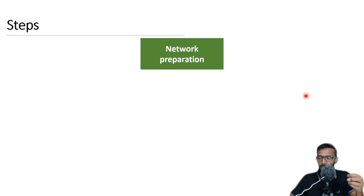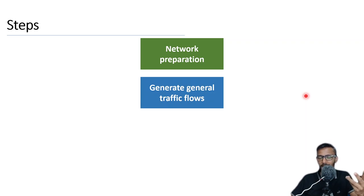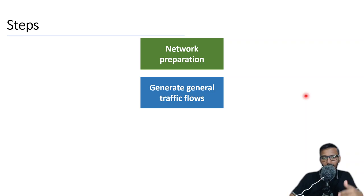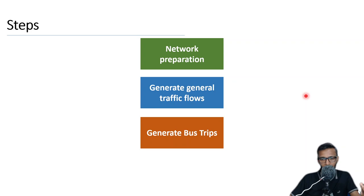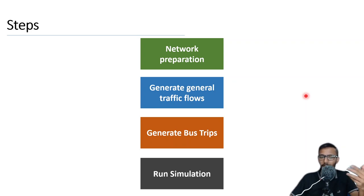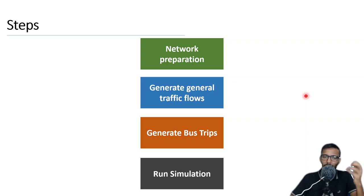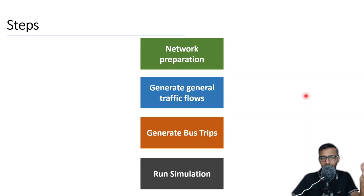To start with a simulation, you need to have a network. Then you need to create or generate traffic flows. In my case, I have divided it into two segments: the first one is general traffic and the other one is bus traffic or public transport traffic. Then, once you have all the elements, you can basically run the simulation. Let's go through each of these steps to understand them in a bit more detail.